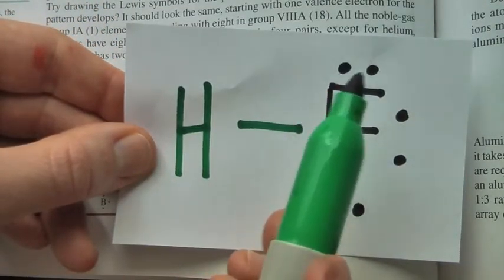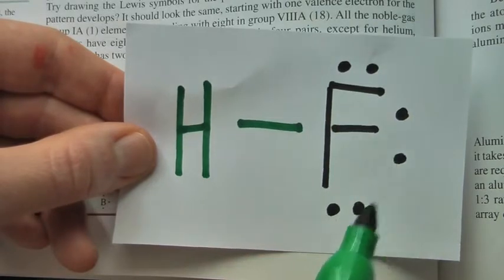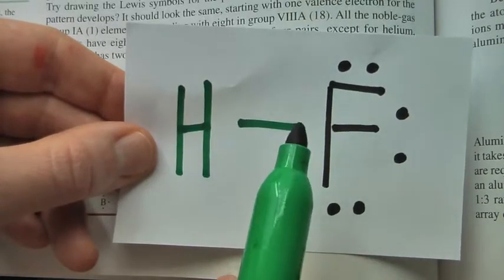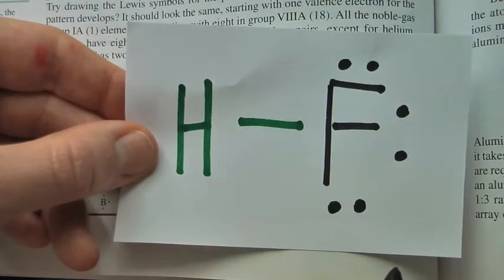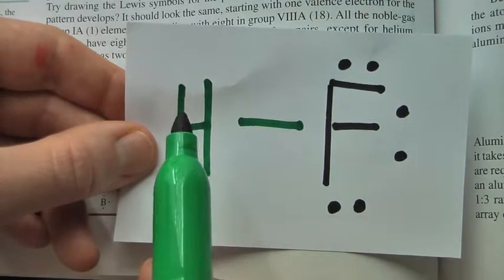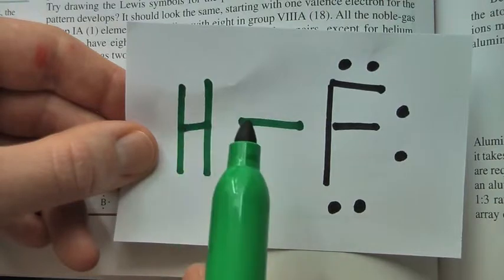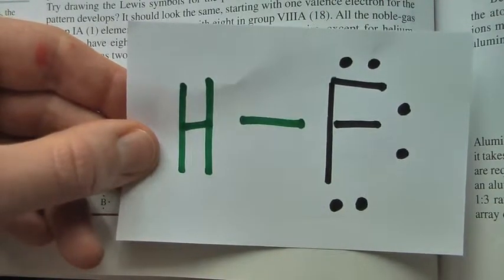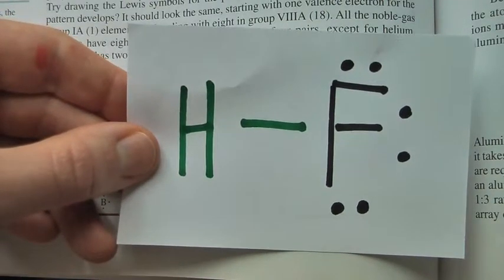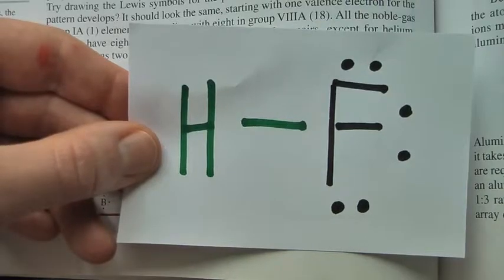So fluorine has eight electrons and is stable, and hydrogen has two electrons. There is the Lewis dot structure for hydrogen fluoride.